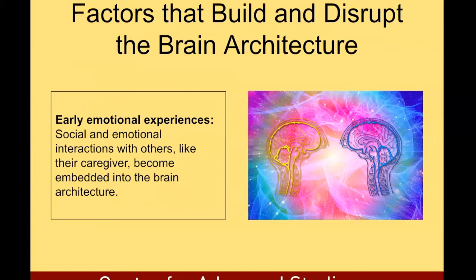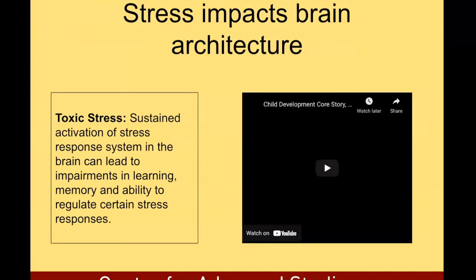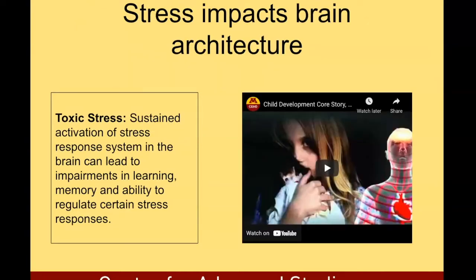There are different factors that build and disrupt brain architecture. Stress also impacts brain architecture. Toxic stress — sustained activation of the stress response system in the brain — can lead to impairments in learning, memory, and the ability to regulate certain stress responses. Here is a small video that talks more about it.